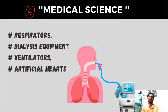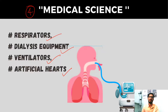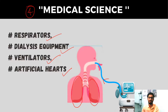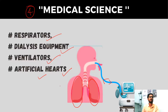The next application is medical science. We use respirators, dialysis equipment, ventilators, and artificial hearts — all of which deal with fluid flow. In a ventilator, a computer-embedded system supplies a calculated amount of air inside the lungs so that they expand, and then sucks the air out so they contract. For this we need fluid mechanics in order to regulate and maintain the airflow. Similarly, an artificial heart is used when no donor is available for a patient as a temporary solution.